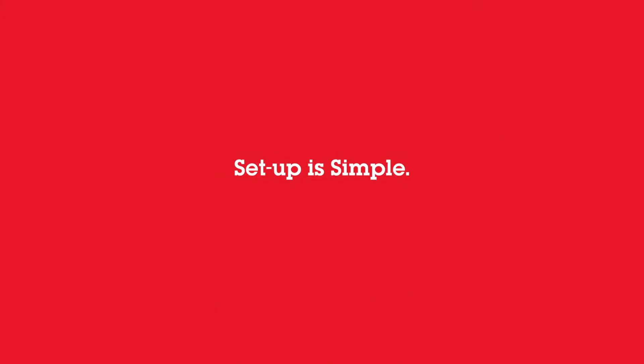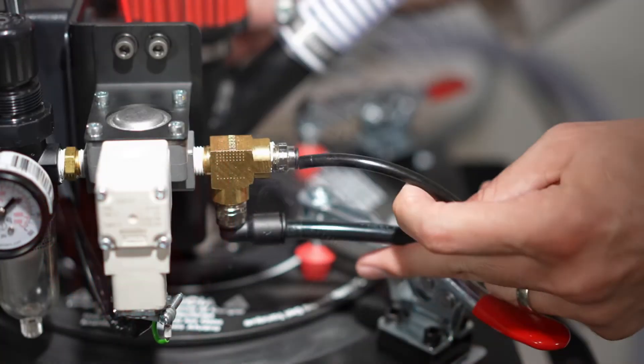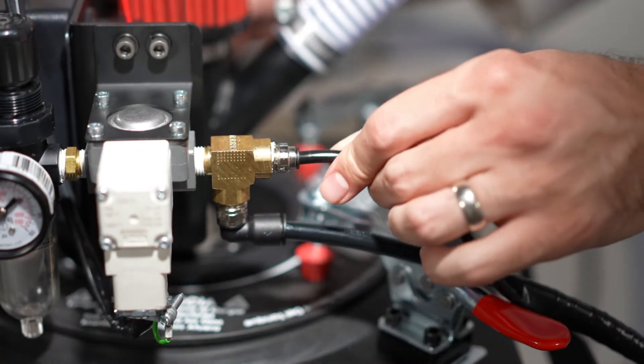Comprised of just three components, setup is simple and operation is easy. With the autofill lid assembly installed on the tank, connect the vacuum hose to the inlet on the tank lid and connect the air lines for the vacuum wand assembly to the solenoid.